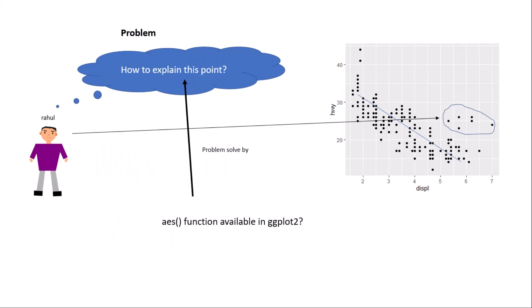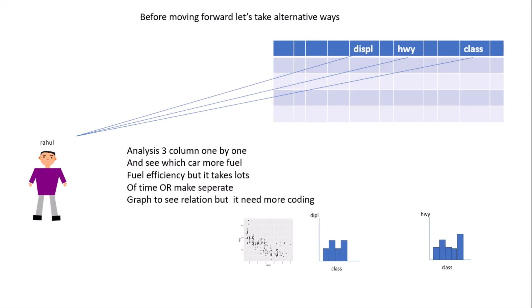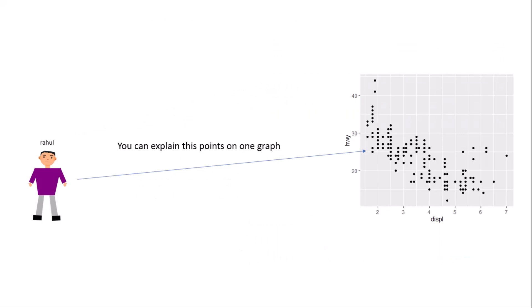This problem is solved by the aesthetic function available in ggplot2. Let's first look at alternative ways to tackle this problem. You could analyze three columns one by one scrolling down with your mouse, but that takes lots of time and Rahul only has five days. Or you could make separate graphs, but that requires more coding and more space in a presentation. The aesthetic function solves this problem — you can explain these points using only one graph.